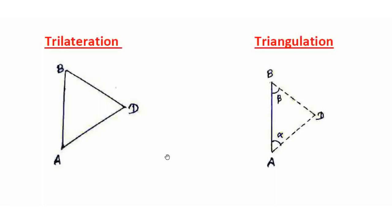Trilateration: A and B are the reference points, D is the new point to be fixed. We can fix the point from A or B by direct linear measurement. We plot the distances and cut the arcs at radius R to locate the point. This is the trilateration chain surveying method.